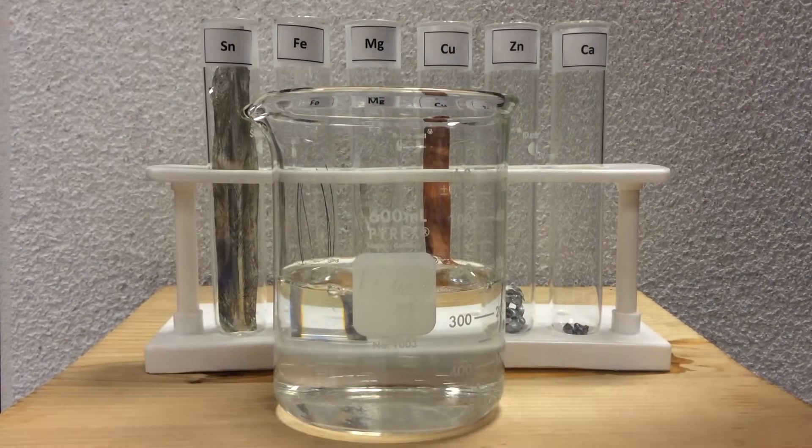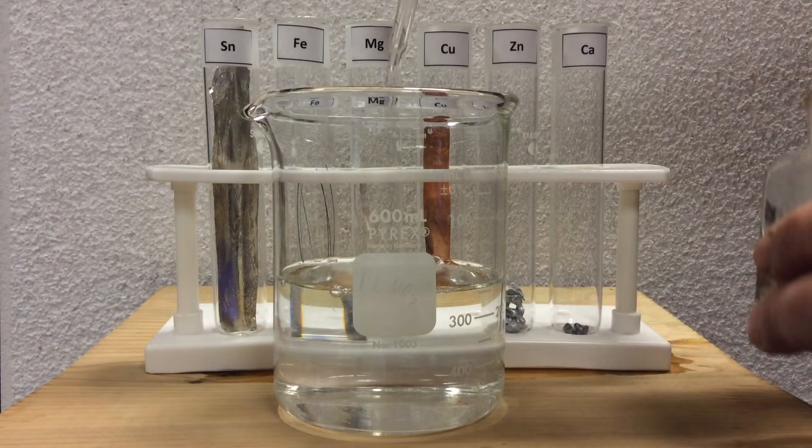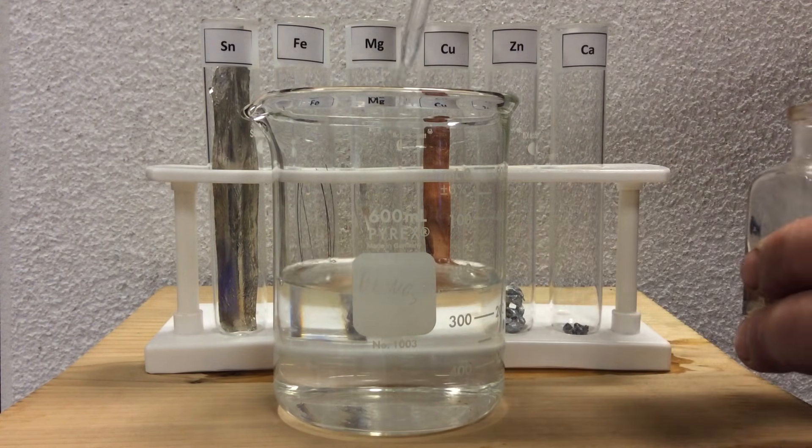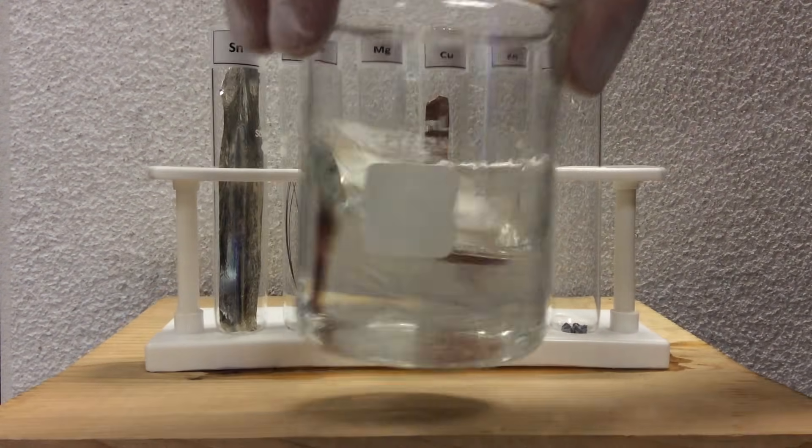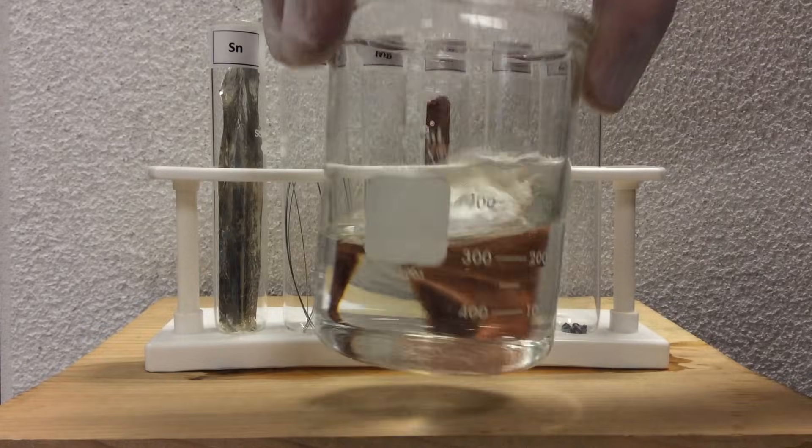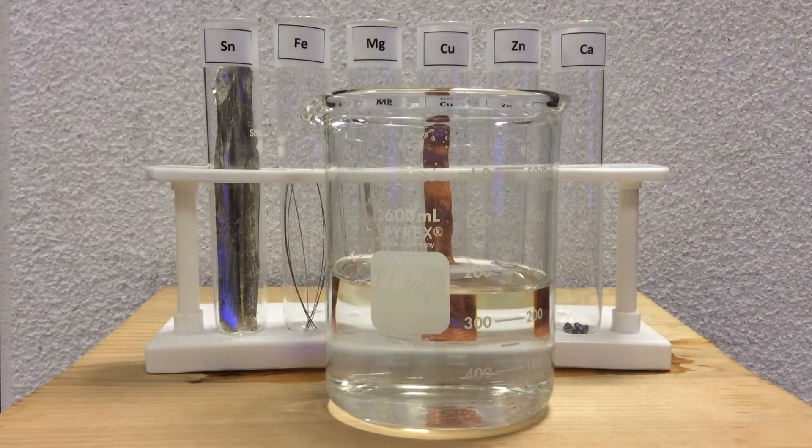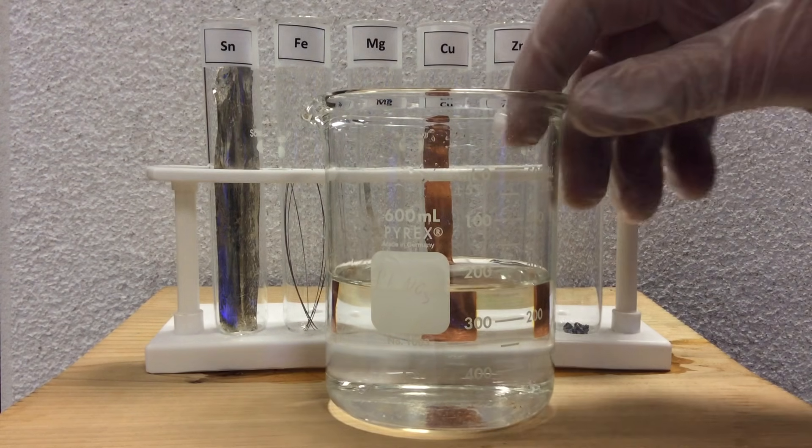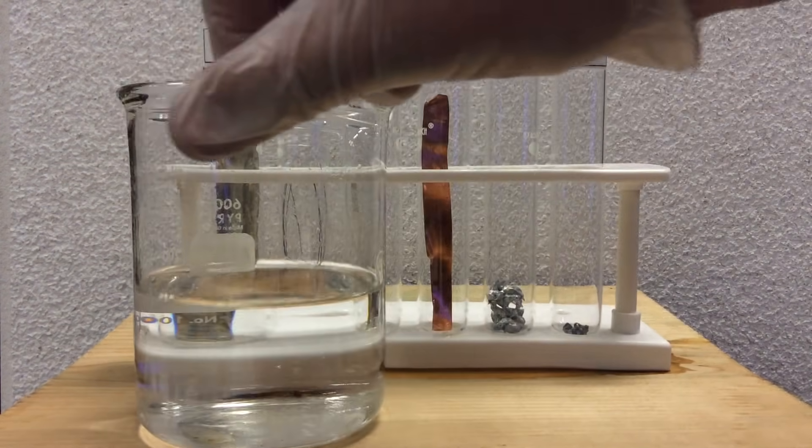So we're looking here for bubbles, visible identification that a gas has been made. And we're looking for the presence of a pink compound as phenolphthalein changes its shape in the presence of a base solution so that it can absorb wavelengths of light in the pink or red.